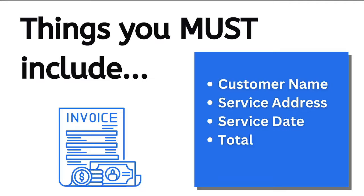Things that you must include on each invoice. First of all, you're going to want to talk with the company that you're working with and make sure that you have all the data that they are requiring. If they're requesting that you send invoices to get paid, you want to make sure that you have all of the components they're looking for. In most cases, we're looking for four things: the customer name, the service address, service date, and of course the total. These can all be line items and you can put multiple customers on one invoice.